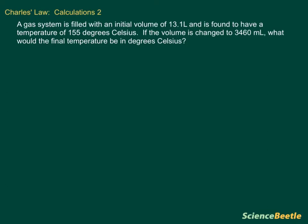In this problem we have a gas system that is filled with an initial volume of 13.1 liters and is found to have a temperature of 155 degrees Celsius. What we want to know is if the volume has changed to 3460 milliliters, what would be the final temperature in degrees Celsius of this system?